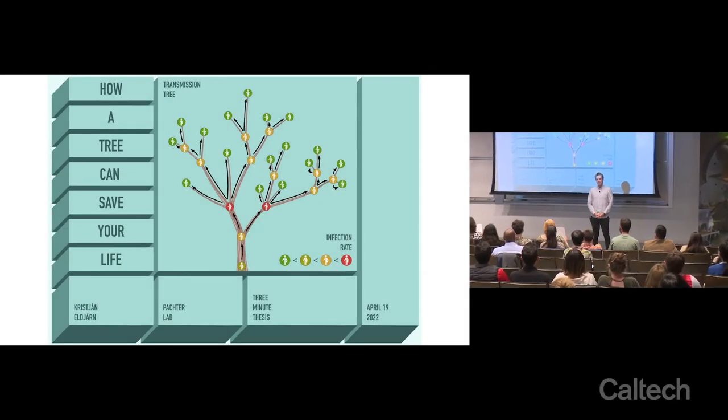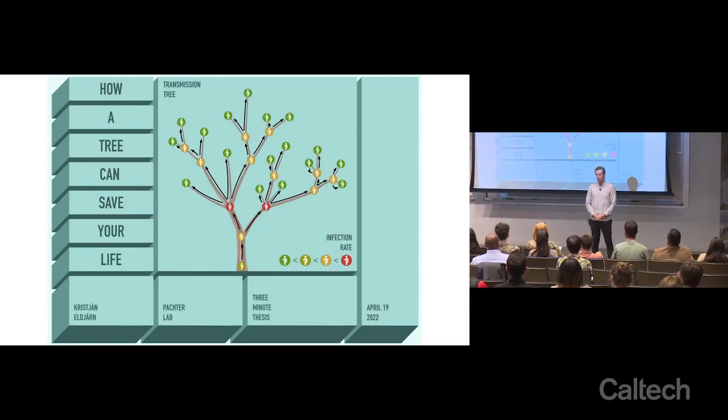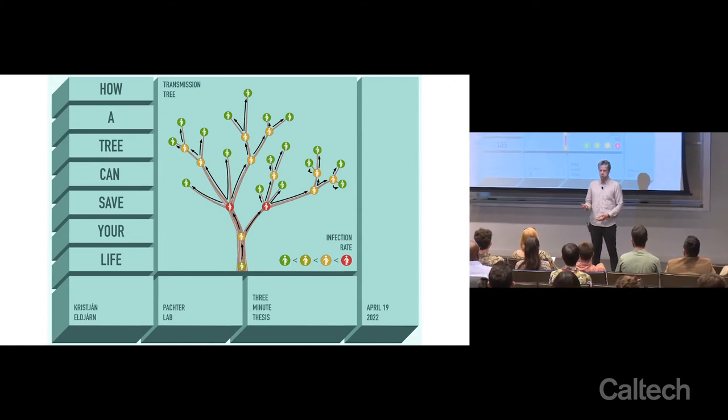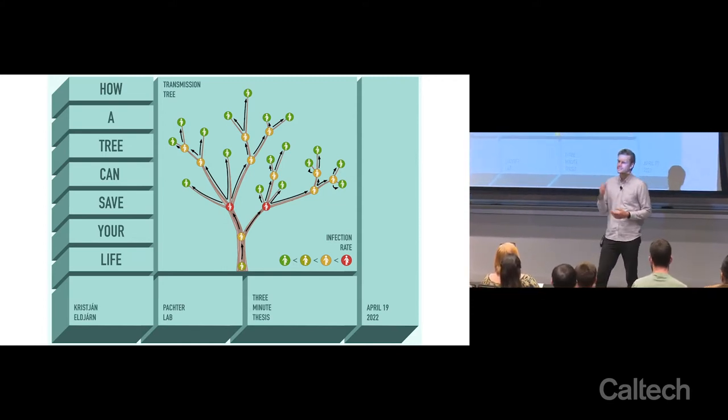Any viral outbreak takes on the shape of a tree, and not the type of tree you would find in your backyard, but a family tree of infections stemming from the first person infected in the outbreak.